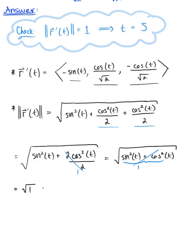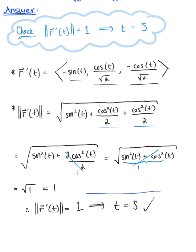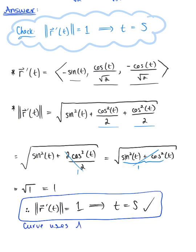The square root of 1 leaves us with 1. Therefore, we have shown that the magnitude of the tangent vector is equal to 1, and therefore our arbitrary parameter t is in fact equal to the arc length. So this curve does use arc length as its parameter — this is our final answer. We can say that the curve uses the arc length s as the parameter.